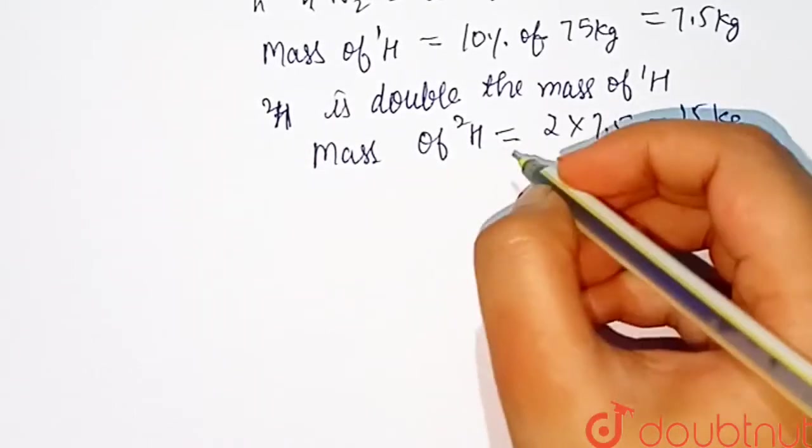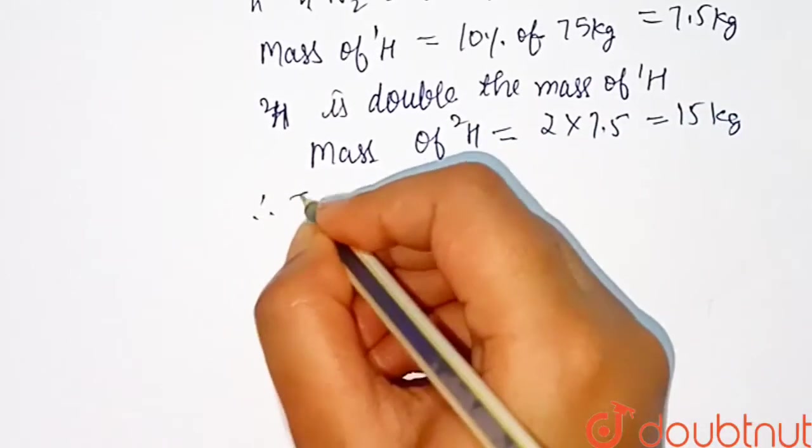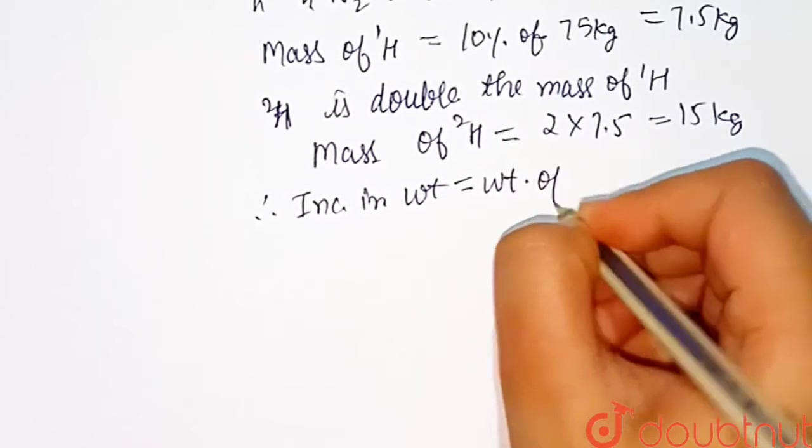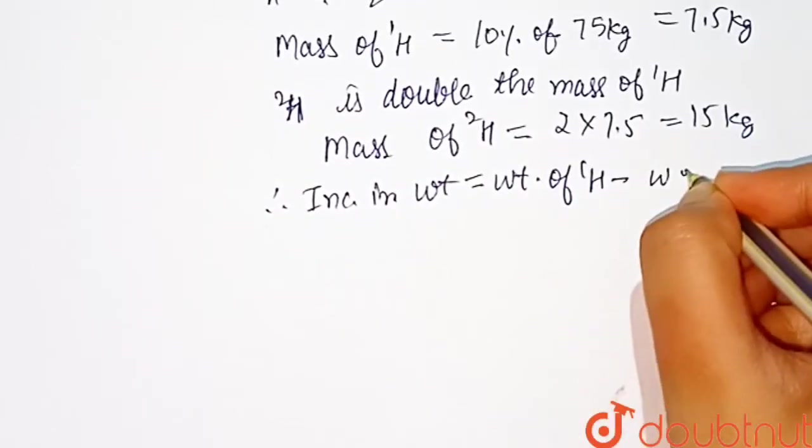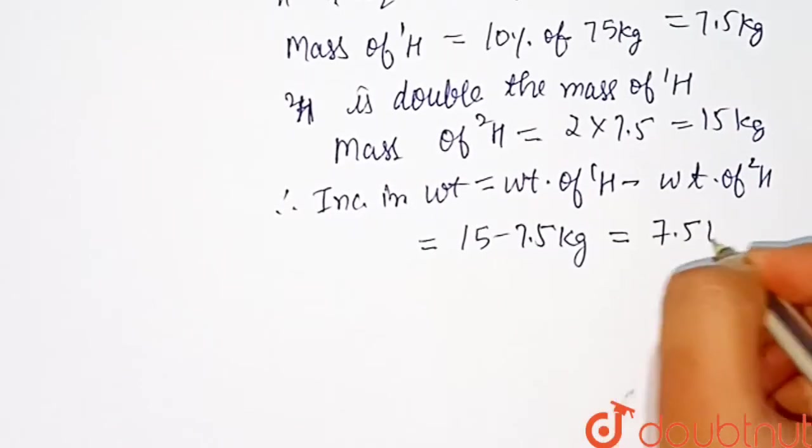According to the question, all H1 are replaced by H2. Therefore, increase in weight equals mass of H2 minus mass of H1, which is 15 minus 7.5 kg, which equals 7.5 kg.